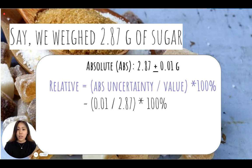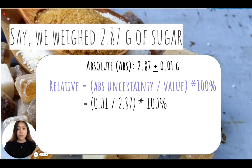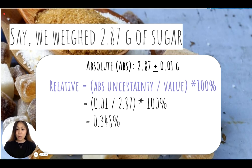The absolute uncertainty is 0.01 grams — that's the number — and the value is 2.87 grams of sugar. So 0.01 divided by 2.87, and because relative uncertainty is a percentage, we multiply by 100%. This gives us 0.348%.